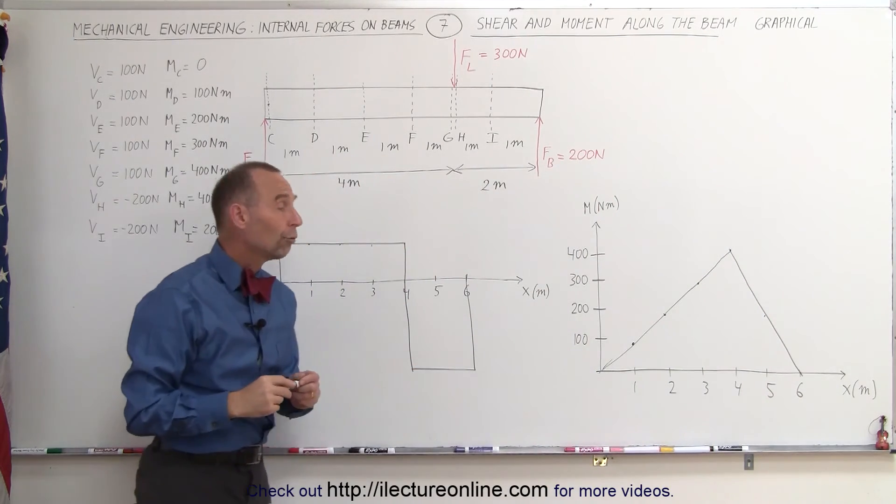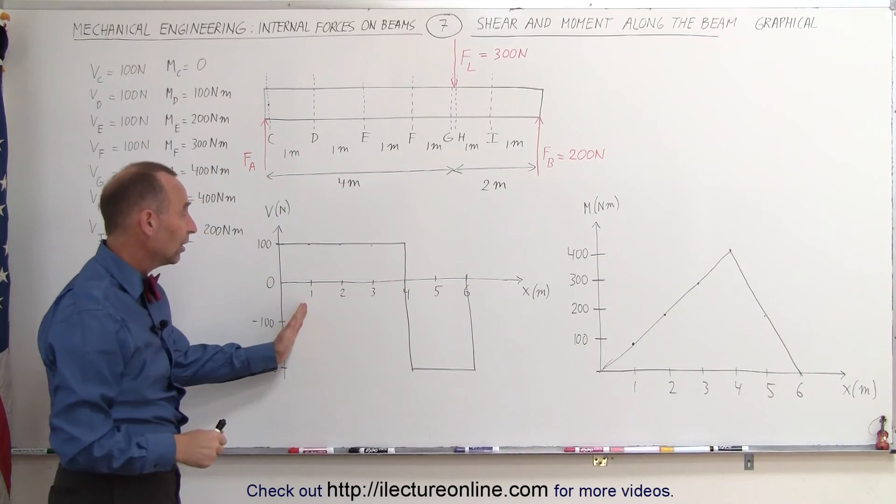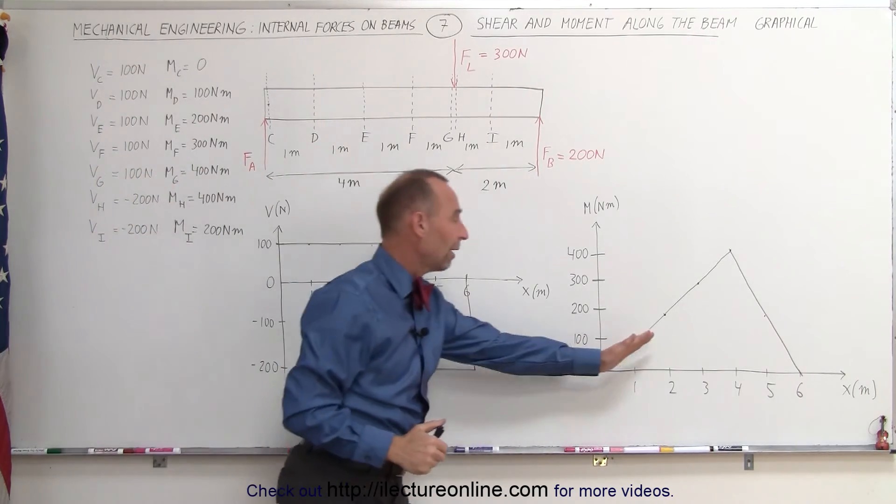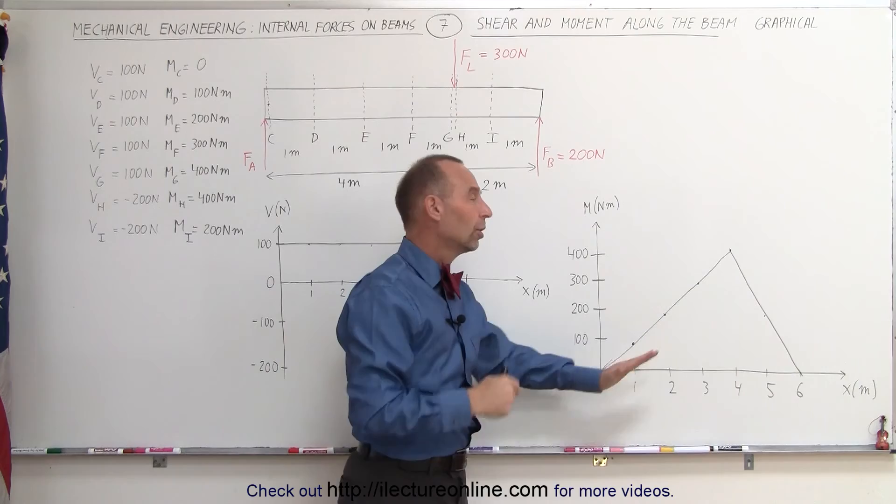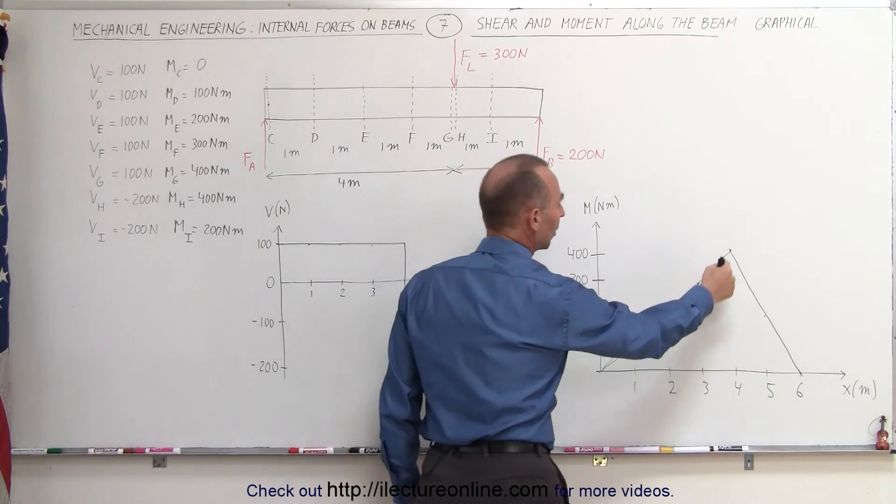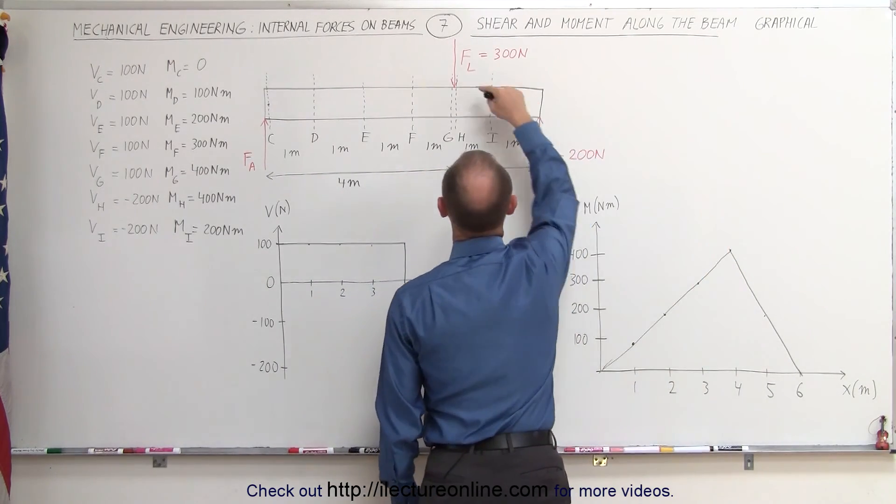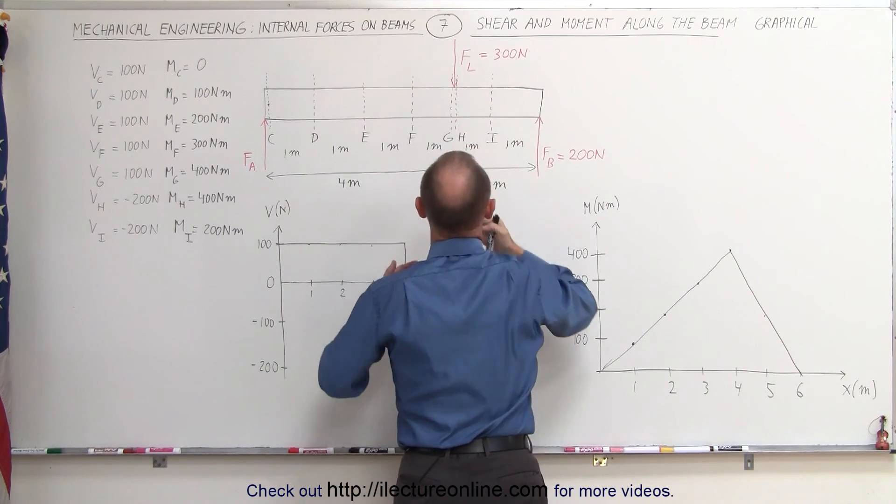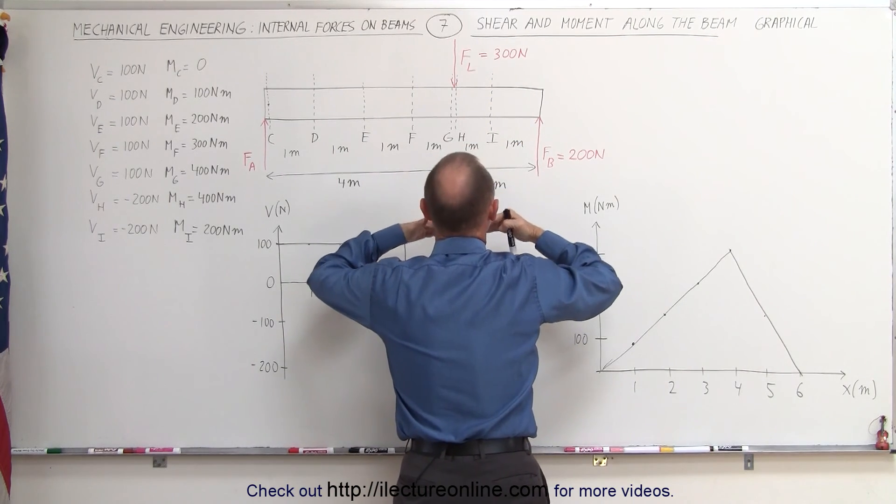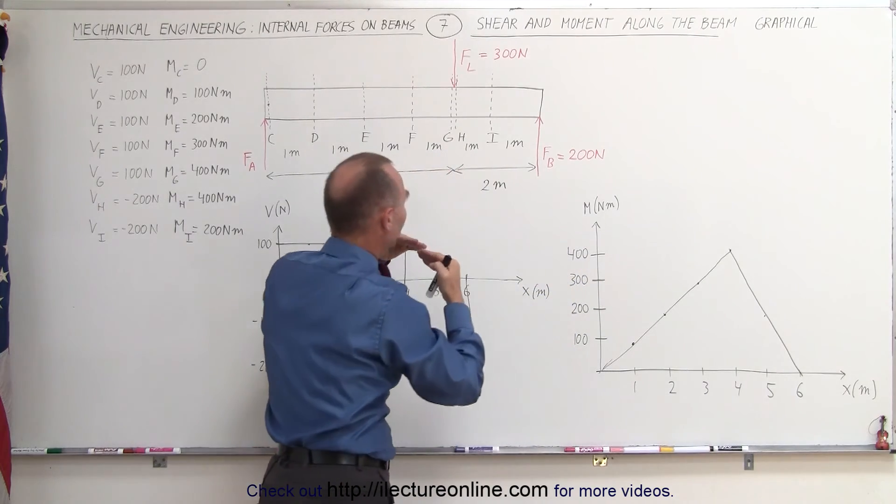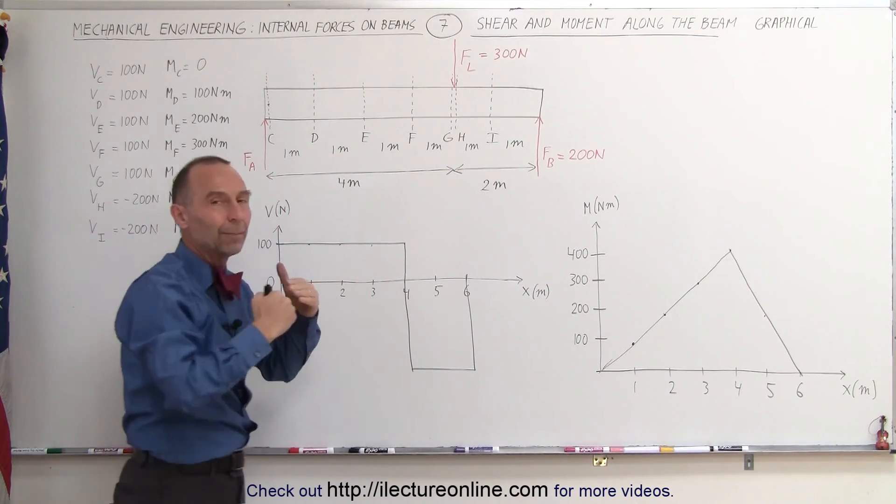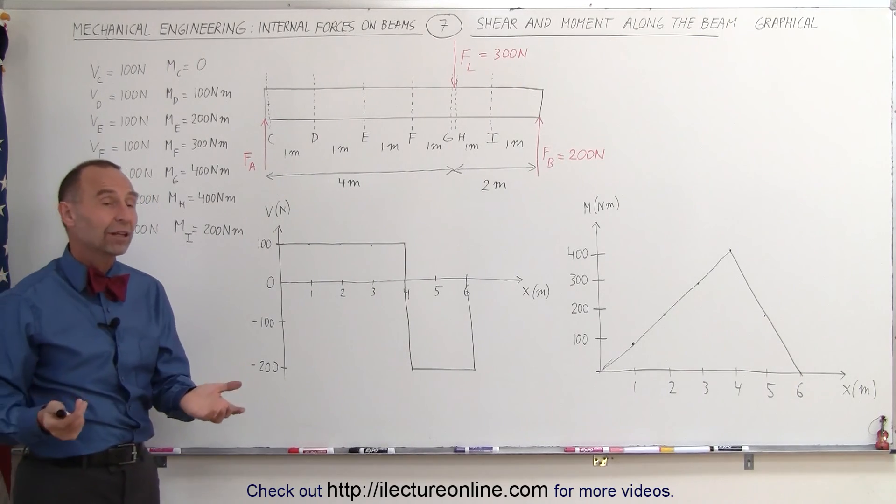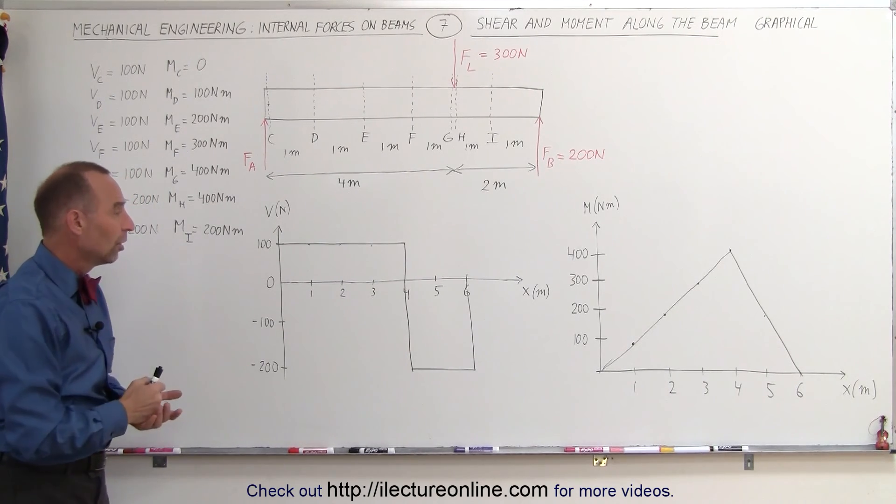So those are the two graphical representations. This one is a graphical representation of the shear force along the beam, and this is a graphical representation of the moment across the beam. The greatest moment is caused at four meters, that's where the load happens to act, and that would be where the beam would have to withstand the greatest forces, internal forces trying to counteract the bending of the beam at that particular point. And that's how we graphically interpret the shear and the moment along the beam.